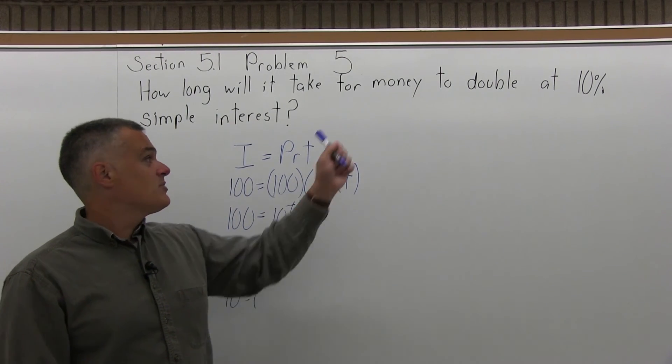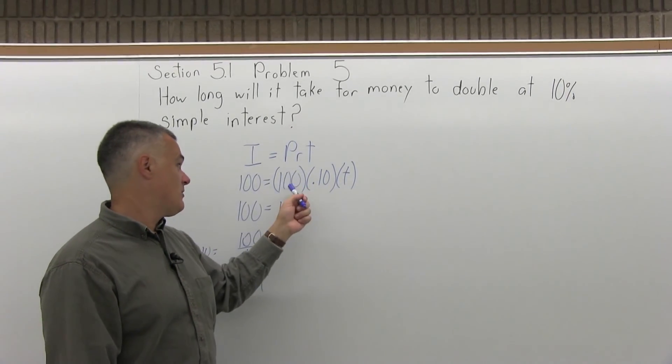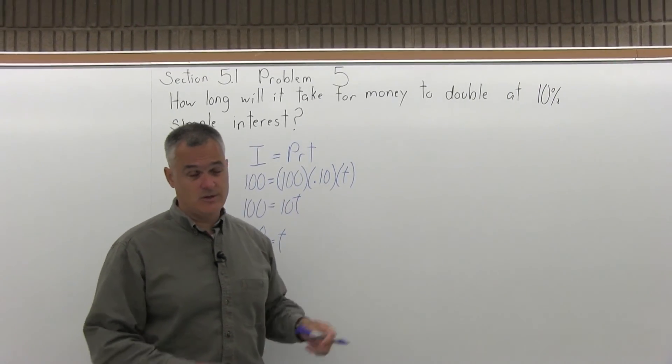T is 10 years. So if you can earn 10% simple interest, it'll take 10 years for you to double your money, no matter how much you start with, whether it's $100 or a different amount.